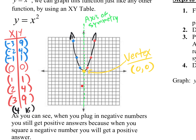The axis of symmetry is the vertical line that passes right through the vertex. If your vertex is over here, the axis of symmetry crosses right through it. For a vertical line, it has to be x equals a certain number — x equals whatever the vertex x value is. In this case, the vertex is (0, 0), so the axis of symmetry is x equals 0.